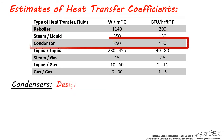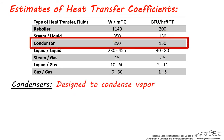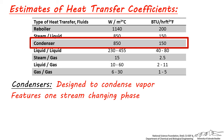A condenser is designed to condense vapor into liquid and its heat transfer coefficient is similar to a steam-liquid heat transfer coefficient, because again there is only one phase change occurring — that of the vapor condensing, most likely on the surface of the tubes.